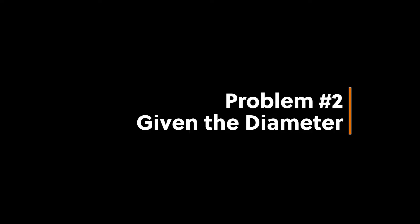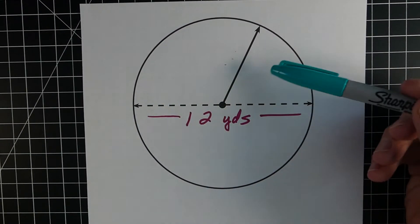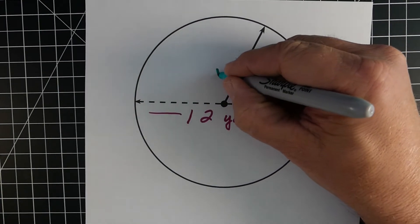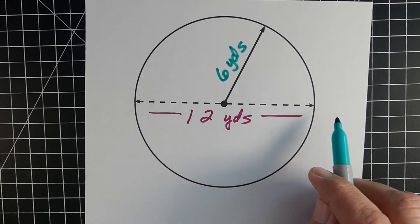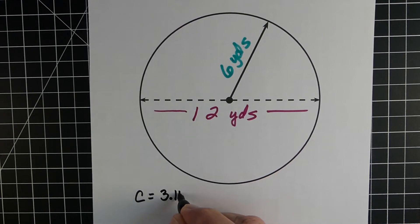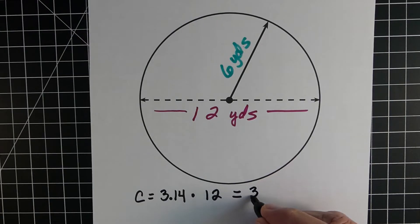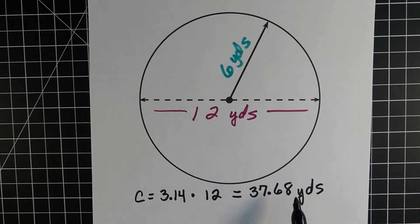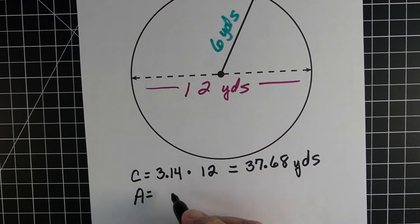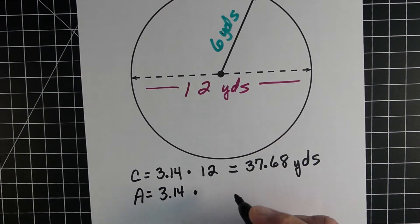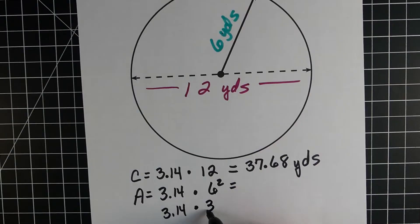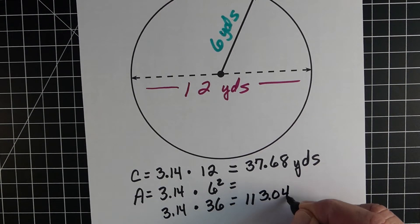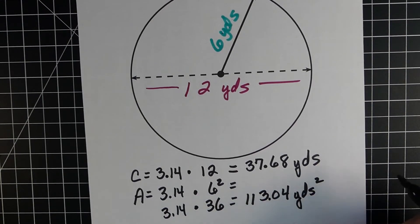Problem two: we know the diameter, which is 12 yards. We need the radius, so we cut 12 in half to get 6 — the radius is 6 yards. For circumference: pi times the diameter of 12 gives us 37.68 yards. For area: 3.14 times 6 squared. Six squared is 36, so pi times 36 gives us 113.04 yards squared.